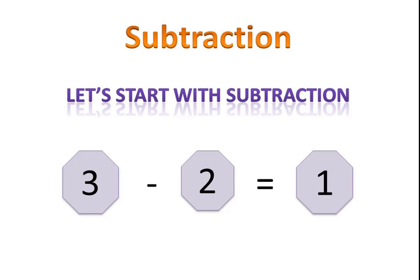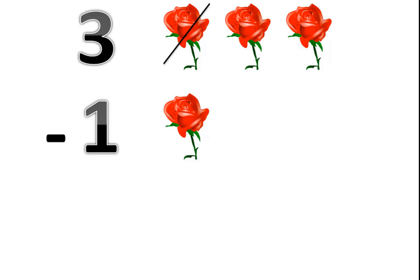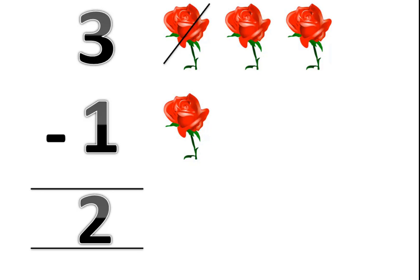Let's take an example. 3 roses minus 1 rose. We have 3 roses and we take away 1 rose from these. So how many roses are left? Let's count: 1, 2. 2 roses are left.